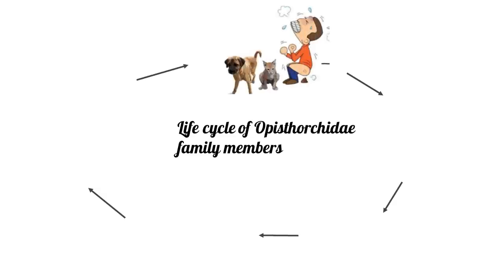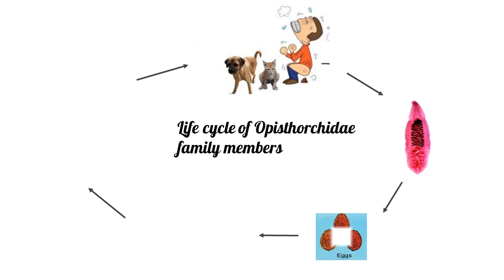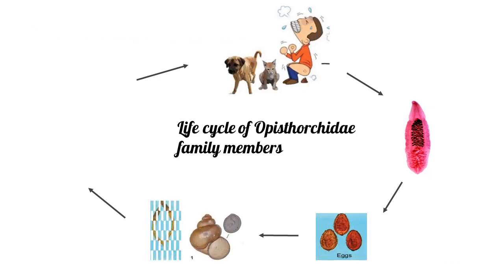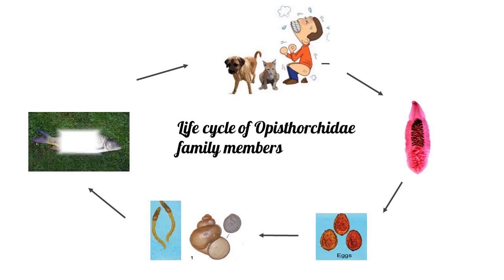The life cycle of the Opisthorchiidae family: the parasite lays eggs which are taken up by snails, inside which cercariae form. Cercariae released from the snail enter into fishes and form metacercariae. When the fish is ingested by dogs, humans, or cats, the adults develop.